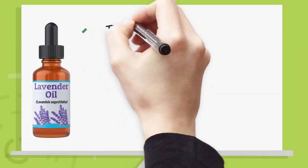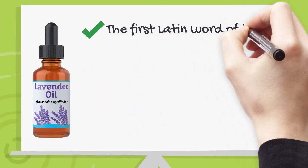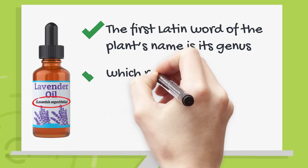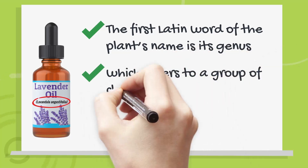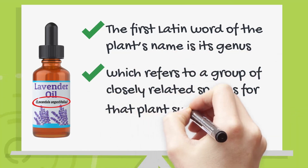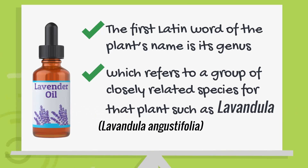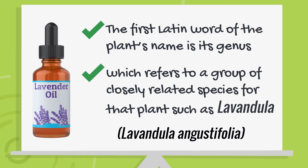The first Latin word of the plant's name, usually printed just below the common name on an essential oil label, is its genus, which refers to a group of closely related species for that plant, such as Lavandula. You will notice that the first letter is always capitalized and it is written in italics.